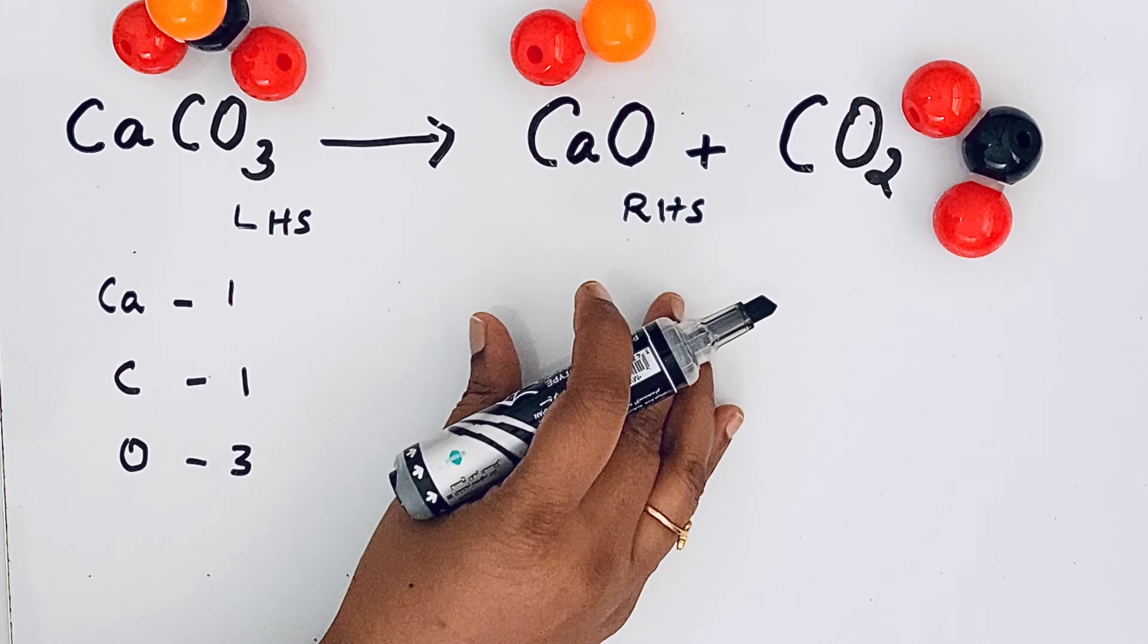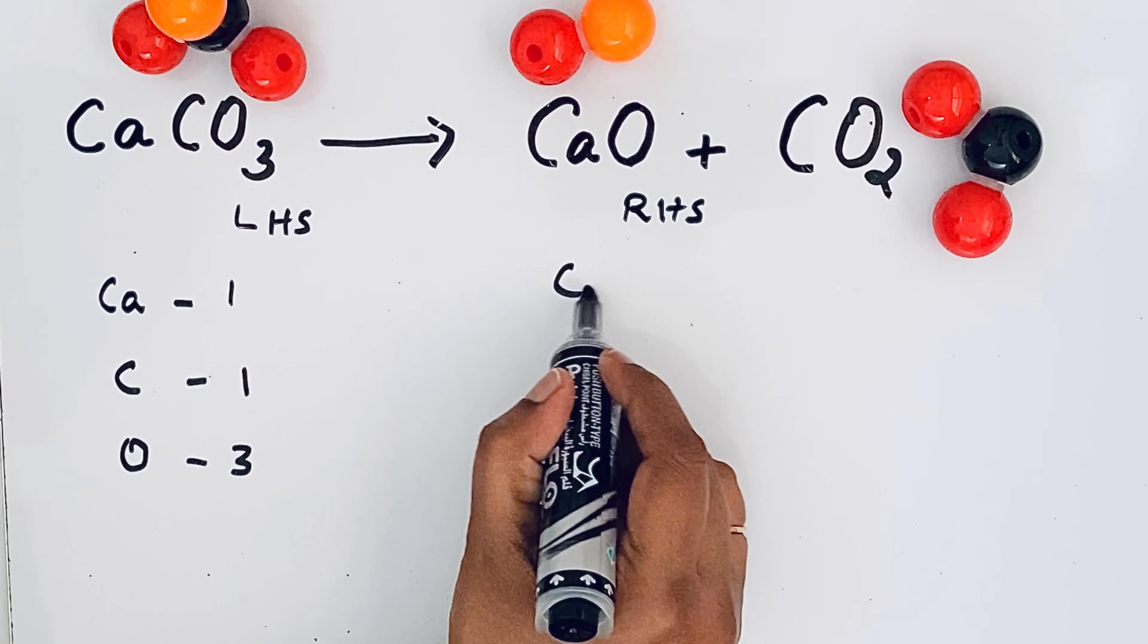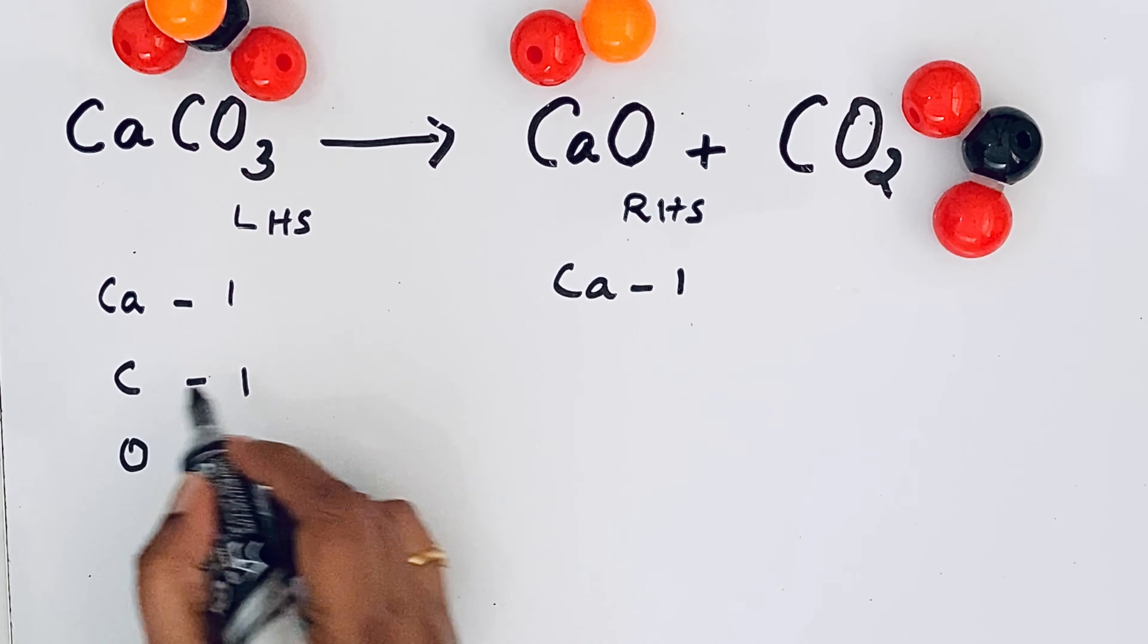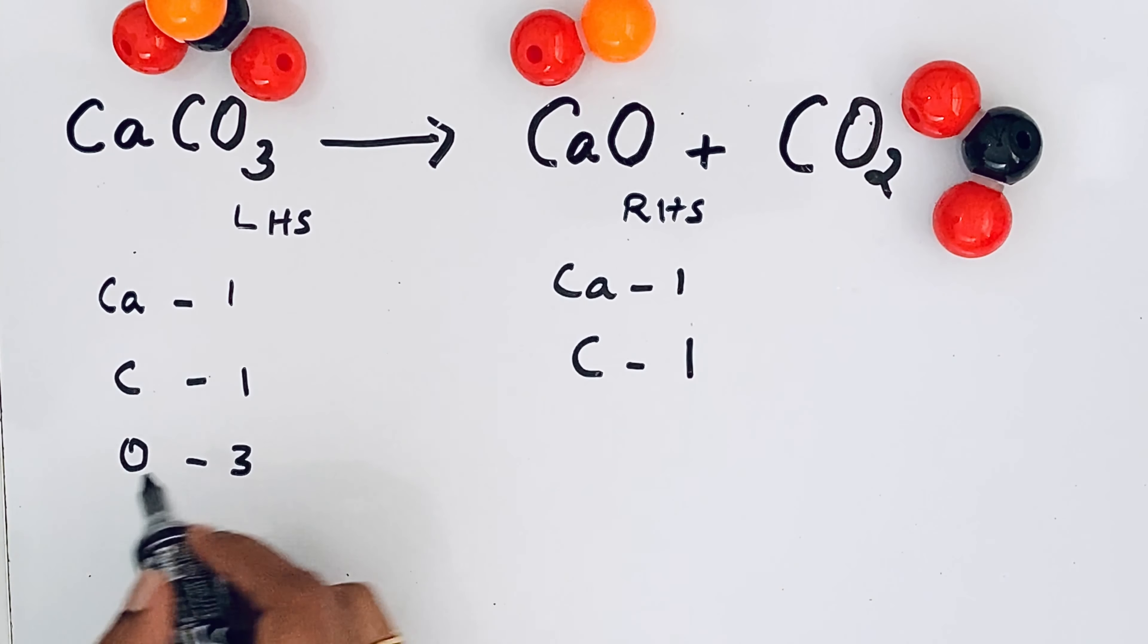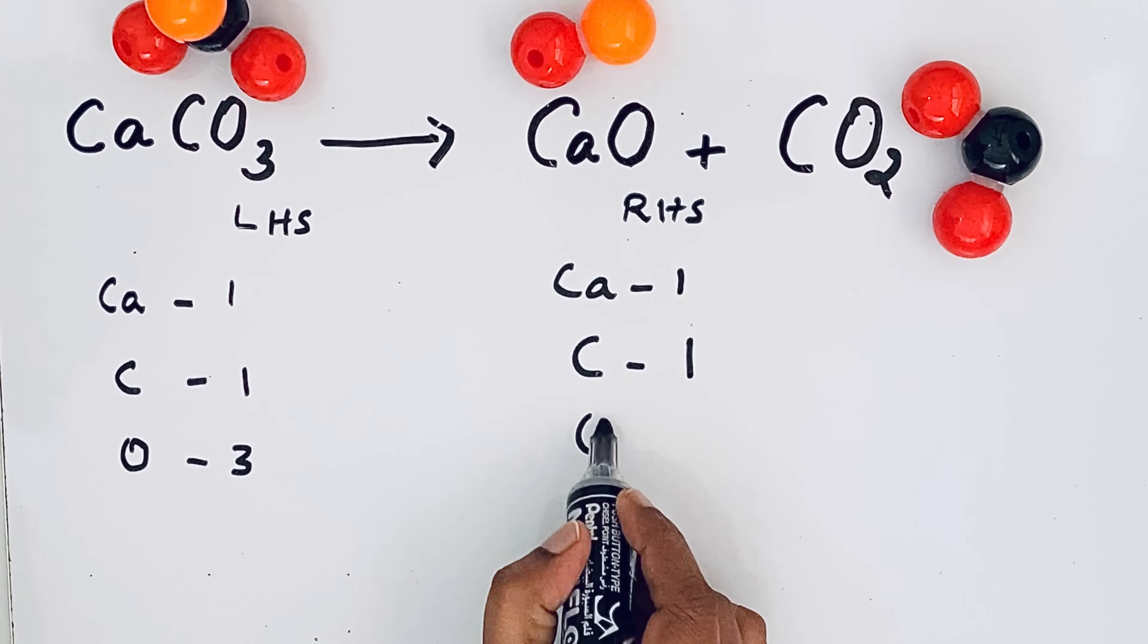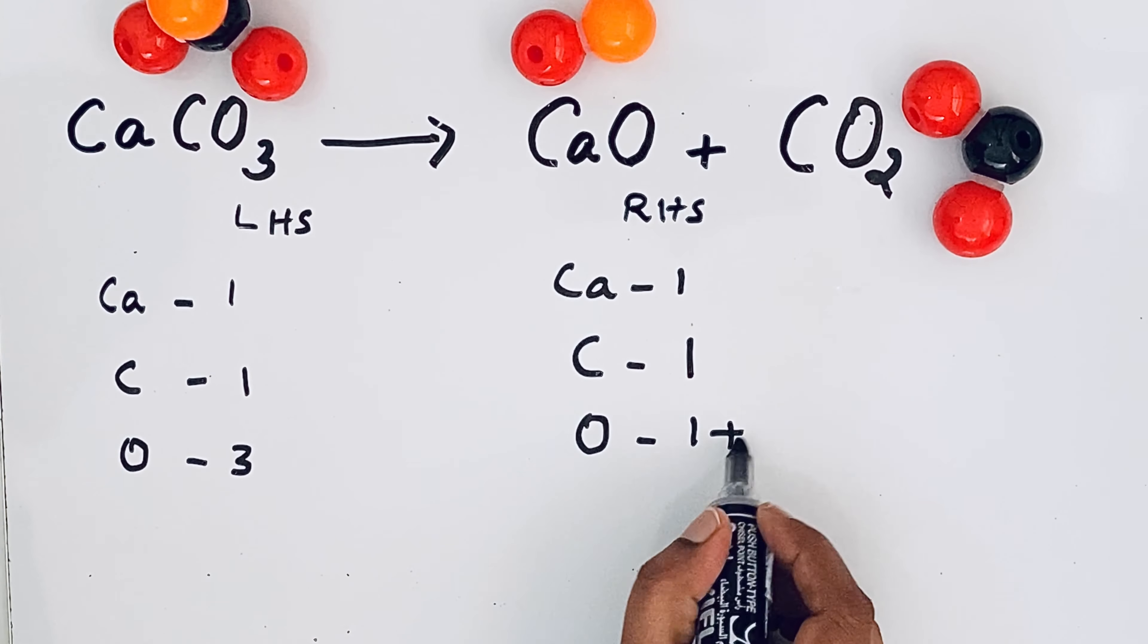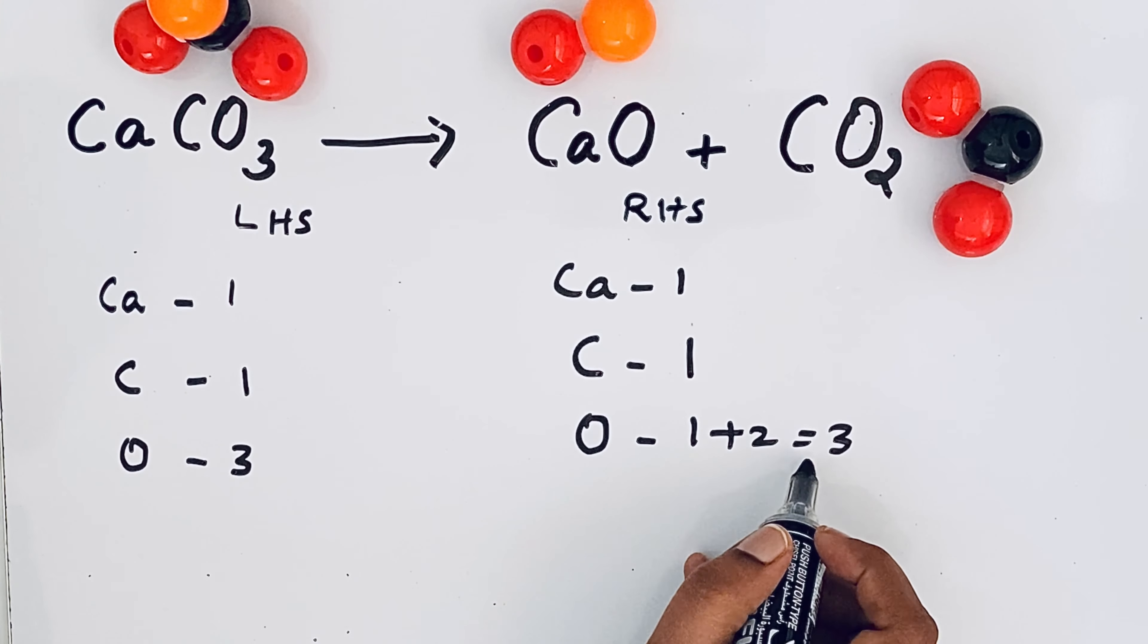The same order we are going to write it for the right hand side also. So calcium you have only one. Then for carbon also only one carbon atom. For oxygen we have here one and here two. So one plus two total we have three oxygen atoms.